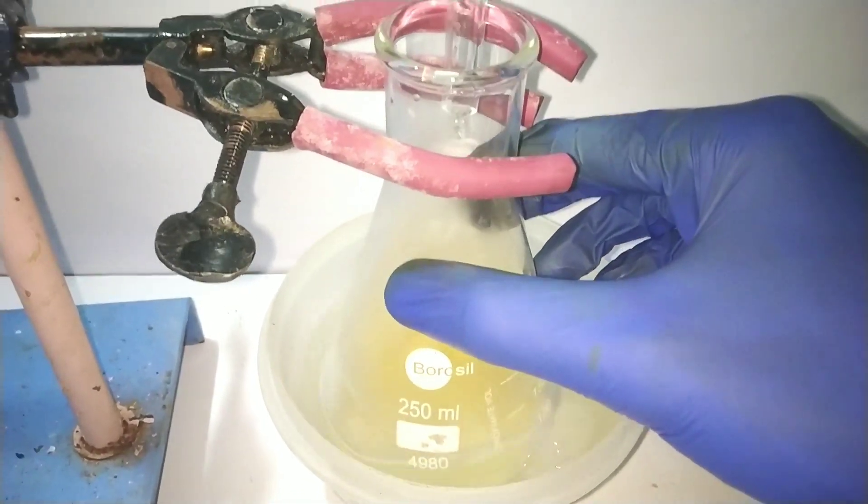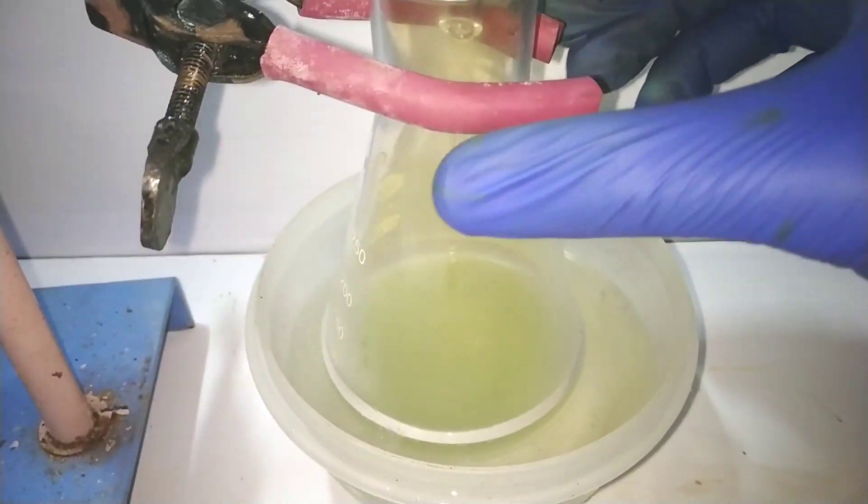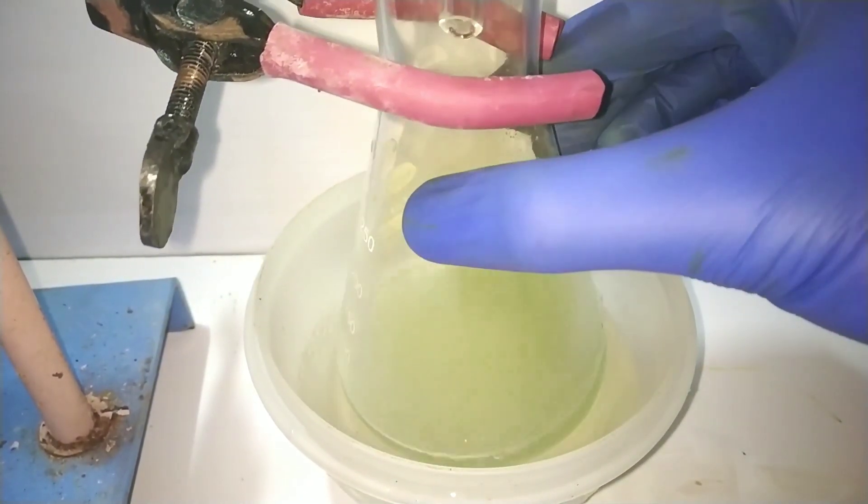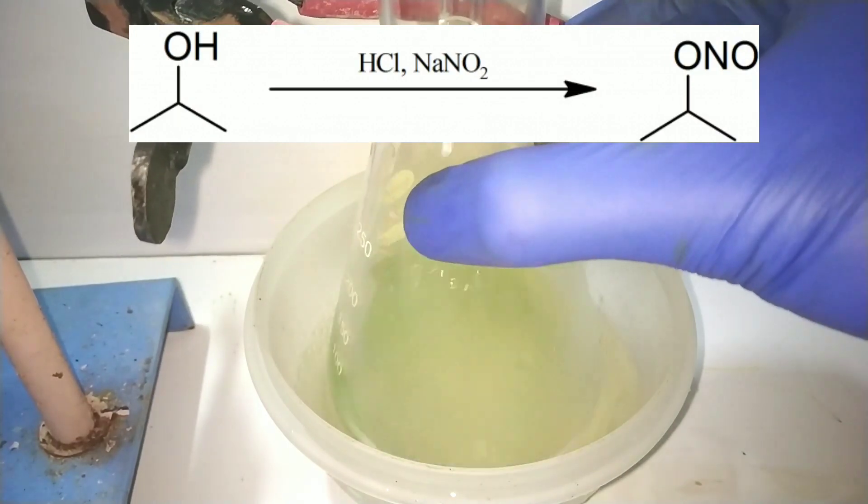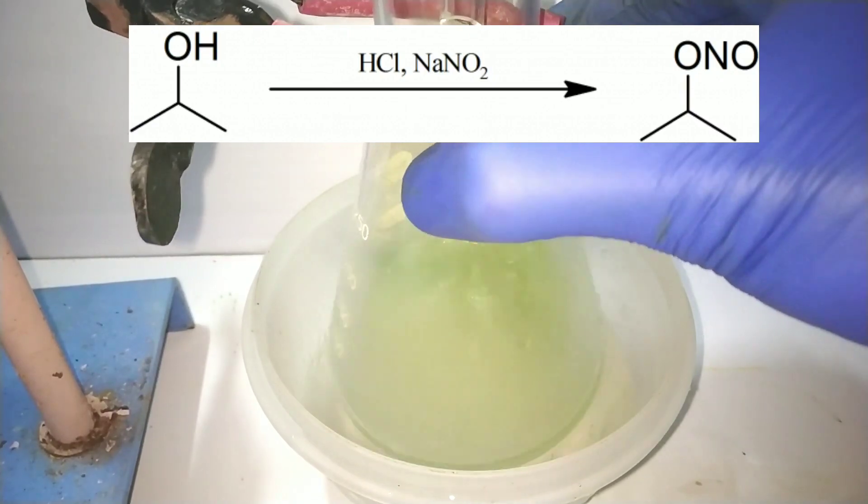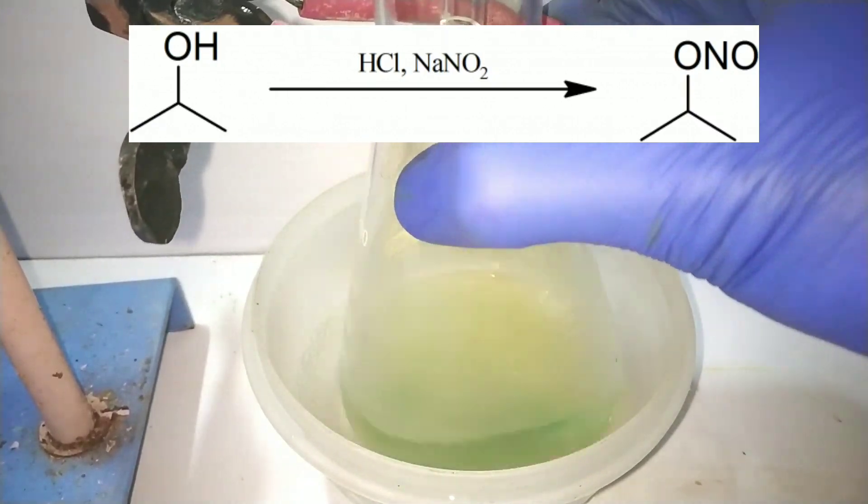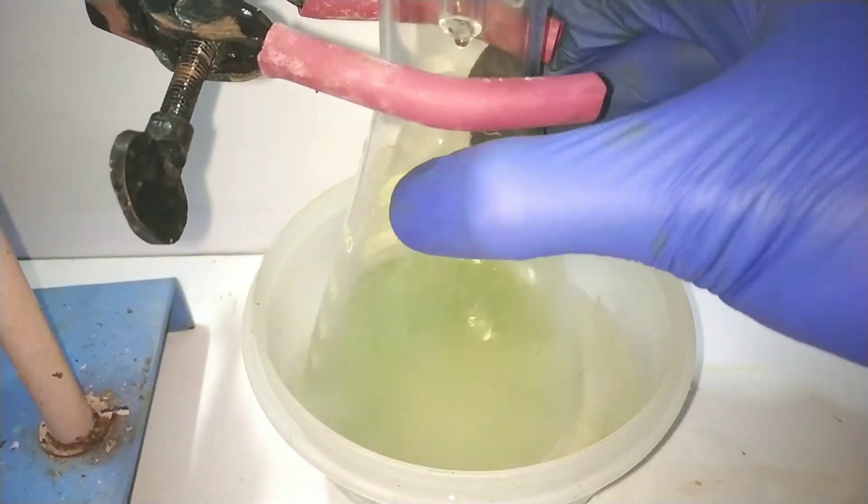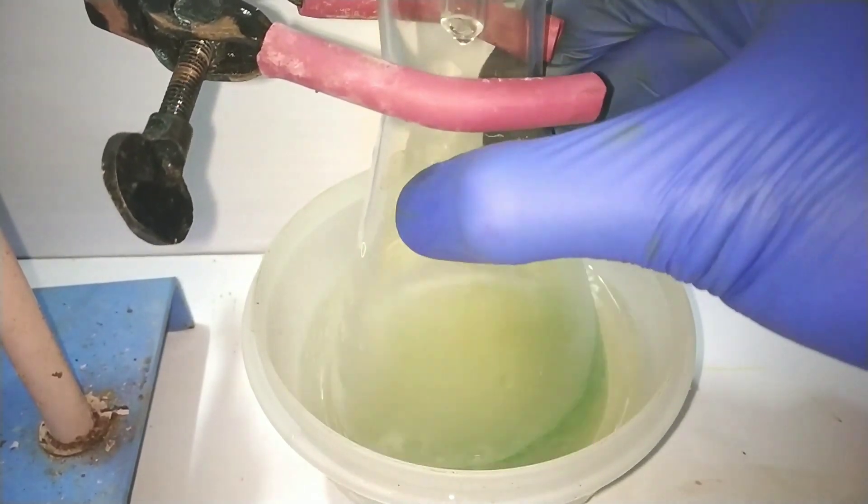See that there is formation of the brown colored nitrogen dioxide gas and the solution first becomes murky and a greenish tinge later appears. Isopropyl alcohol reacts with hydrochloric acid and sodium nitrite to form the isopropyl nitrite.